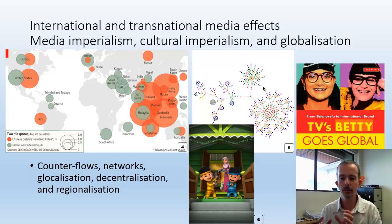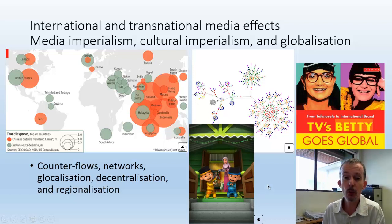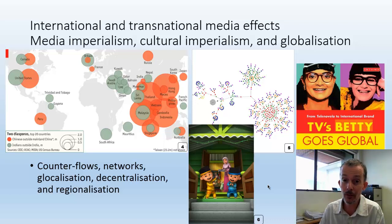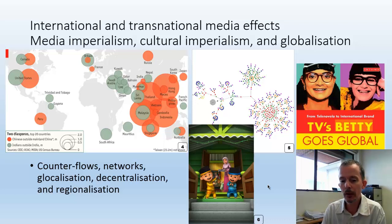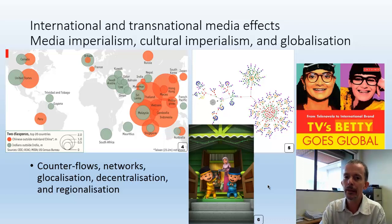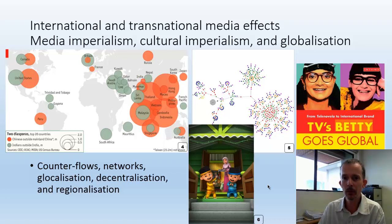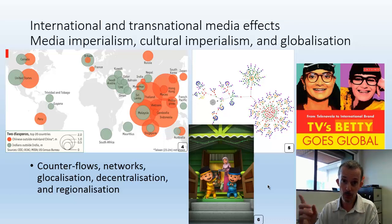The cartoon Upin and Ipin is a Malaysian production that has been exported and is particularly popular in places like Turkey. It's an example of how media flows are not only going from dominant countries like America and Europe, but also how countries like Malaysia can produce content and export it to others — demonstrating counter-flows of media content.